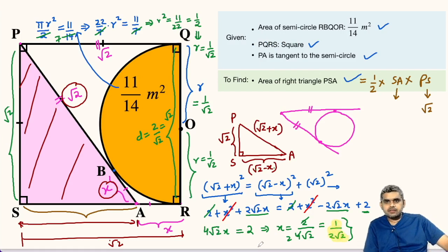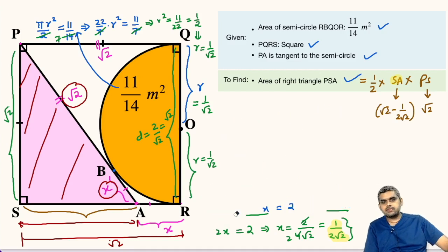So, after getting the value of X, we can find the value of SA. SA is root 2 minus X. Here, we can write root 2 minus X is 1 upon 2 root 2. We will close the bracket here. Now, let me clean the board.